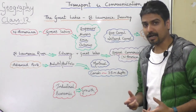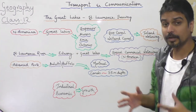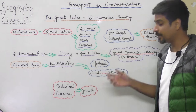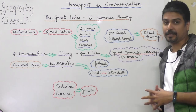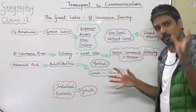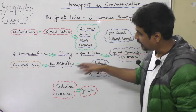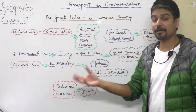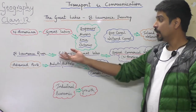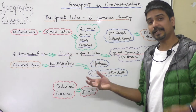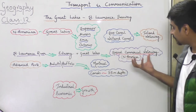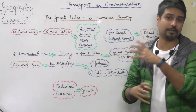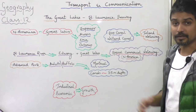Sioux canal aur Vilan canal, joh naam se famous hai, yeh dho canal hai. In canal se yeh sare lakes aapas mein ek inland waterway banaate hai. They are all connected. In fact, Saint Lawrence river, kaafi famous river hai North America ki, uski asturi Great Lakes ke saath mil ke ek special commercial waterway banaate hai, joh ki pure North America ko support kerti hai.